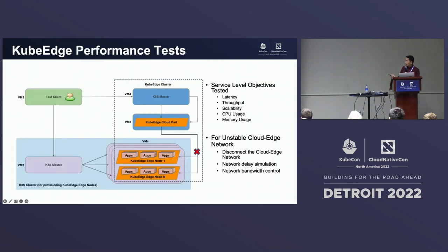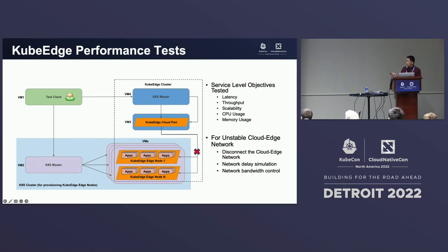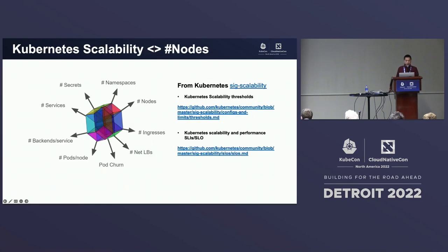Now I'm talking about the performance test. This topic covers the Kubernetes cloud and edge network. Basically, what we do is test our SLO — Service Level Objective test — covering latency, throughput, scalability, CPU usage, and memory usage. For the usage scenario, we especially cover the unstable cloud-and-edge networking part because we are a cloud-native edge project. That means the edge-to-cloud connection is different from an intra-data-center connection — it's not stable, could be disconnected or have long delays, and we have restricted bandwidth.